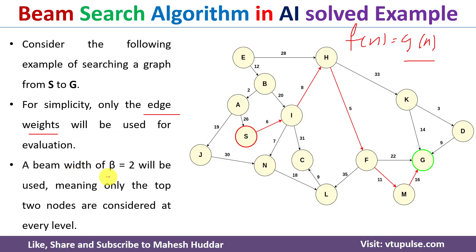A beam width of β = 2 is given. The meaning of this is that at any given point, if we have more than two successors, we will select only the top two successors and then continue from there. That is the meaning of beam width β = 2. Now we will apply the step-by-step procedure to find an optimal path from the initial state to the goal state.